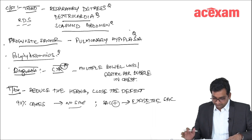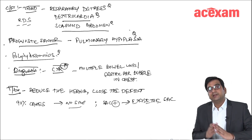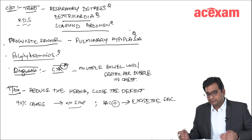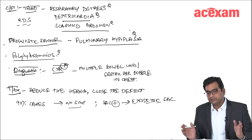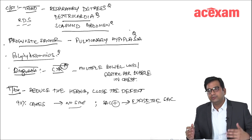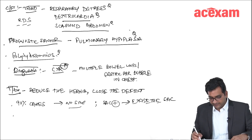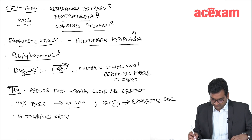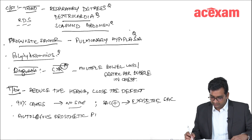How will we close the defect? Normally in adult patients, we use mesh. But in a small child, the child gradually grows and the mesh, being a prosthetic, will not grow. So we will prefer using an autologous patch for closure.